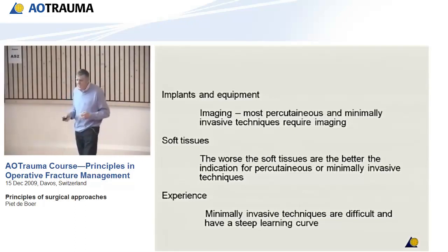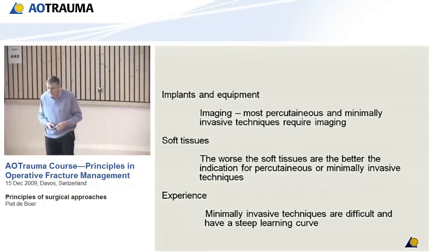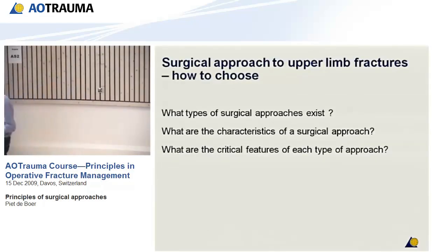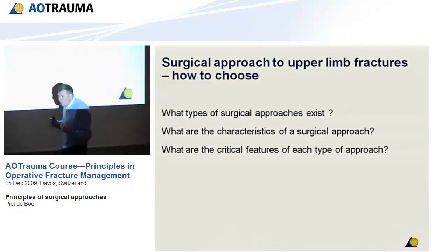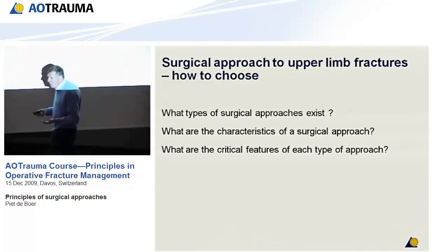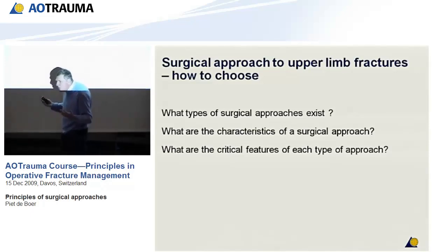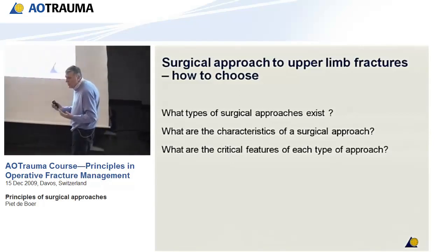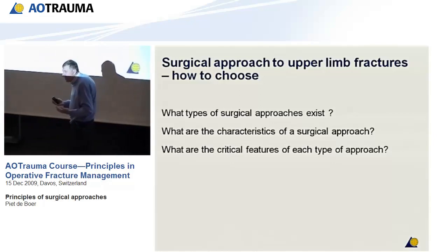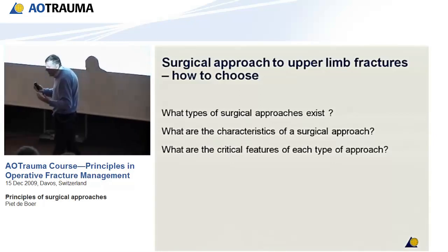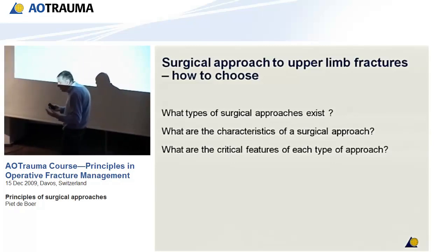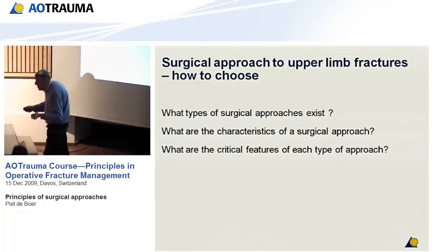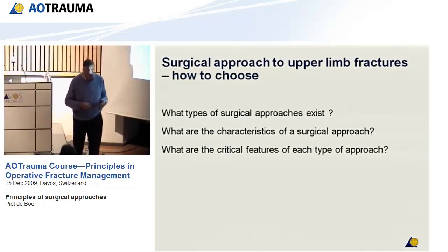I hope you now understand that there are three types of surgical approach: percutaneous, minimal access, and open. Every surgical approach shares the same characteristics: landmarks and incisions, some form of layered dissection, and dangers. And the smaller the incision, the less chance you have of seeing the danger — and the greater your need for anatomy. Thank you very much for your attention.